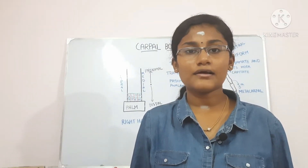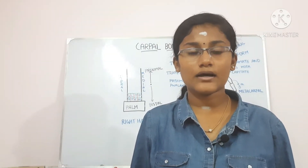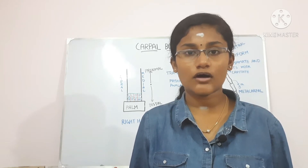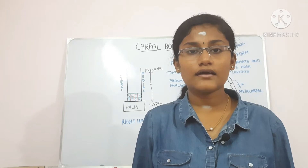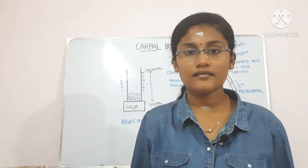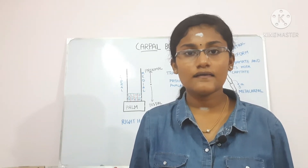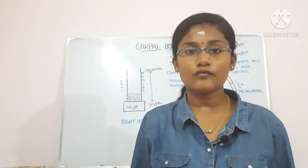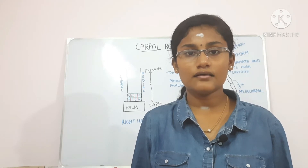Hello friends, welcome to my channel. This is Abhirami and I am here to discuss with you about today's topic: the carpal bones. The carpal bones are present in the wrist region and there are 8 in number. They are divided into 2 rows and each row has 4 bones. These 2 rows are called the proximal row and the distal row.